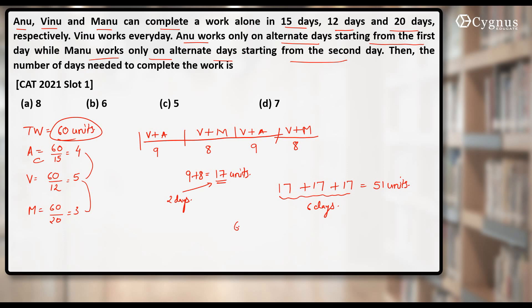Now how much of the work is left? Out of total work 60, they have already finished 51, so 9 units of work is left. Now it is the turn of the pair of Vinu and Anu, and I know that in one day they can do 9 units. So this 51 plus 9 makes 60, so the number of days will become 6 plus 1 more day, that is 7. So my answer becomes 7.